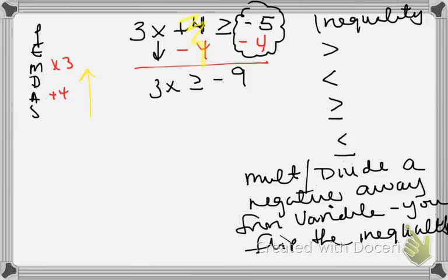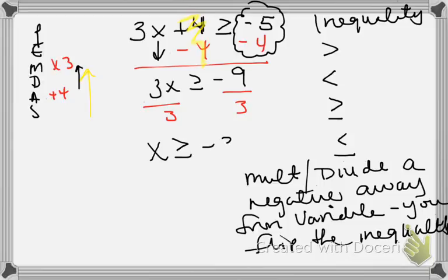Now I'm going to divide. X is being multiplied by three, so the opposite is divide by three. I'm going to divide both sides by three. Notice I'm dividing by three, but it's not a negative — we're not dividing a negative away from the variable. X is positive. So we're going to keep the sign the same. X is going to be greater than or equal to negative three.